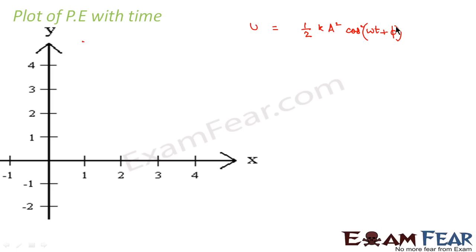Here also, let us assume that the initial phase constant φ is 0. We always assume φ to be 0 because we assume the particle starts its motion from phase 0 — it is not necessary that φ is always 0, but for mathematical simplicity we make this assumption. So in that case, let us start from the first instant, at t equal to 0.